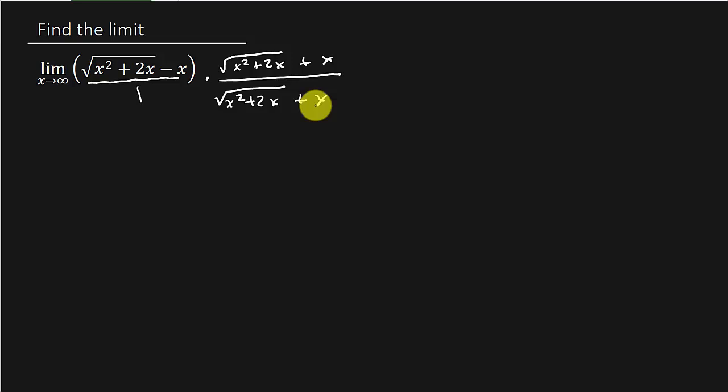So that is going to give us the limit as x goes to infinity of x squared plus 2x minus x squared. Right? So this would be, let's write it down. This would be a minus b times a plus b, which is equal to a squared minus b squared.